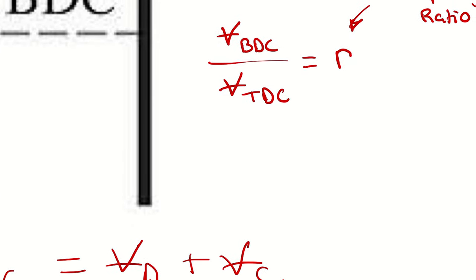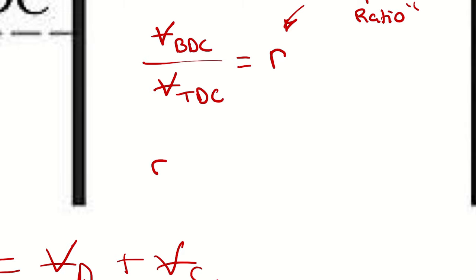We can also rearrange this and write it in terms of other things. For example, we can write this as VD plus VC divided by VC if we wanted to.